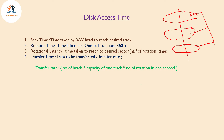Now let's calculate the disk access time. The access time is calculated as: seek time plus rotational latency plus transfer time. This is the disk access time — the summation of these three components.